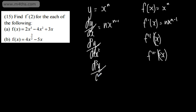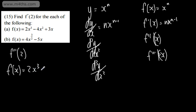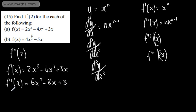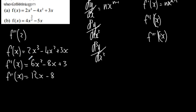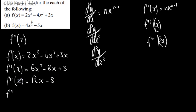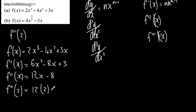So what we need to do is find f''(2). For f(x) = 2x³ - 4x² + 3x, the first derivative f'(x) = 6x² - 8x + 3. The second derivative f''(x) = 12x - 8. Substituting x = 2: f''(2) = 12(2) - 8 = 24 - 8 = 16.